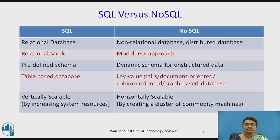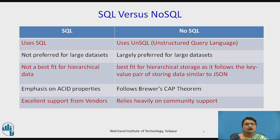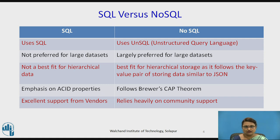NoSQL is horizontally scalable because as commodity machines on the cluster increase, the processing power and speed increase. Therefore NoSQL is a horizontally scalable one. SQL uses SQL as its query language, whereas NoSQL supports an unstructured query language called UnSQL.